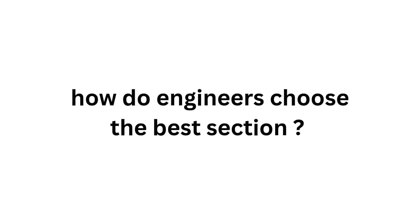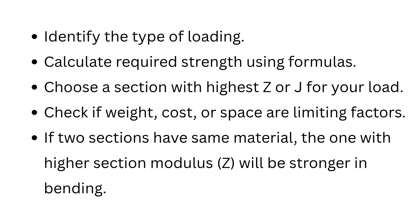So how do engineers choose the best section? First, they identify the type of loading on the structure. Then they calculate the strength requirement. Next, they choose the proper section using the highest section modulus or polar moment of inertia as appropriate. Finally, they consider the weight, cost, and space factors. If two sections have the same material, the one with the higher section modulus will be stronger in bending.